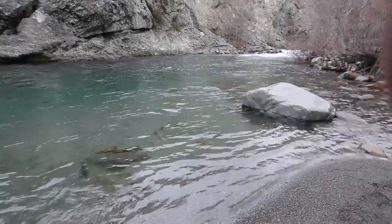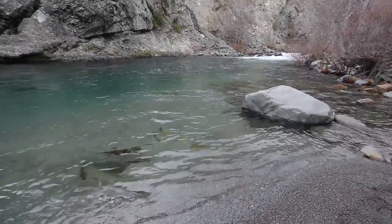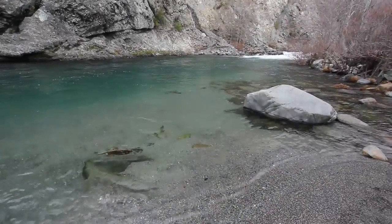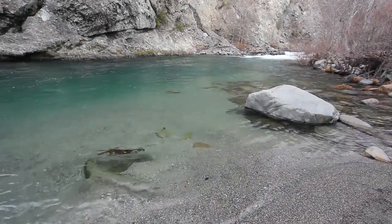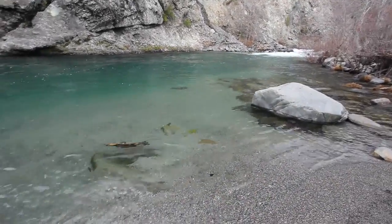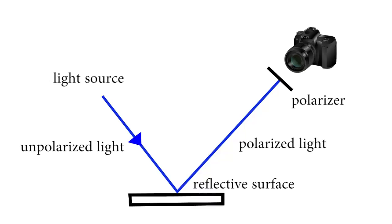If I twist the polarizer, I can remove the reflections from this river. It does that by polarizing the light entering it, which causes some already polarized light to be reflected instead of passing through the filter and becoming part of your photo.